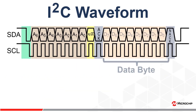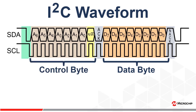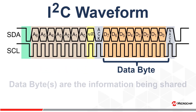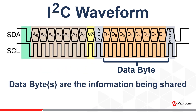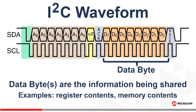Next is the data byte. The data byte or data bytes contain the information being transferred between the master and the slave. The data contained in this byte can be command bits, register settings, memory contents, sensor readings, or any number of things. The number of data bytes transmitted is determined by the operation being performed and the structure of the slave device being accessed. Common examples are the word address or register address that the master wants to access, the data to be written in a write operation, or the data from the slave requested in a read operation.